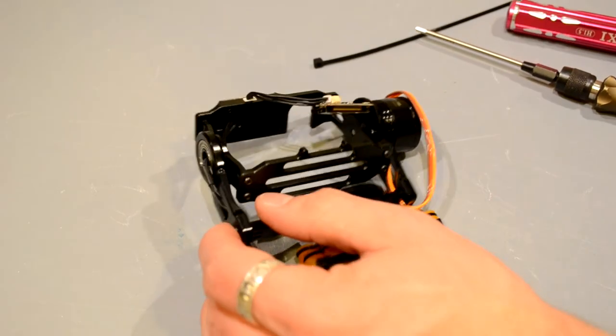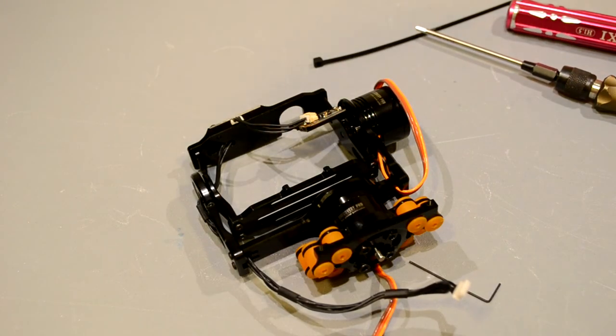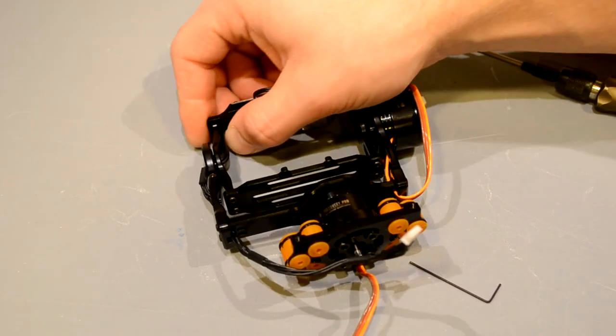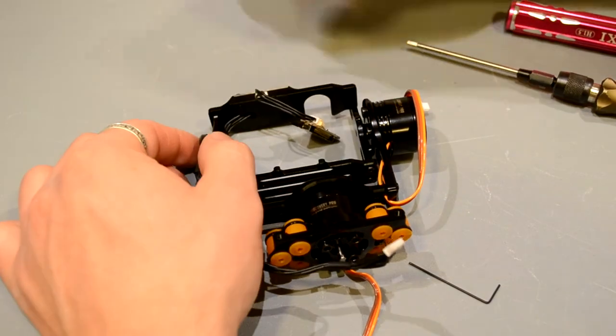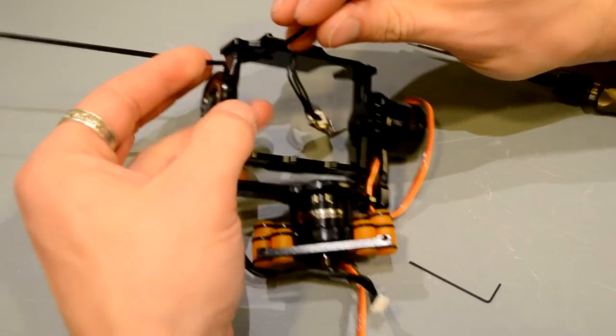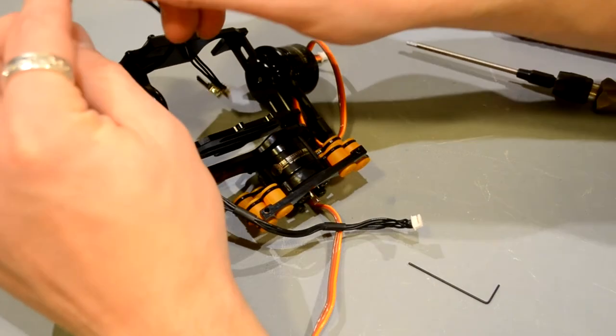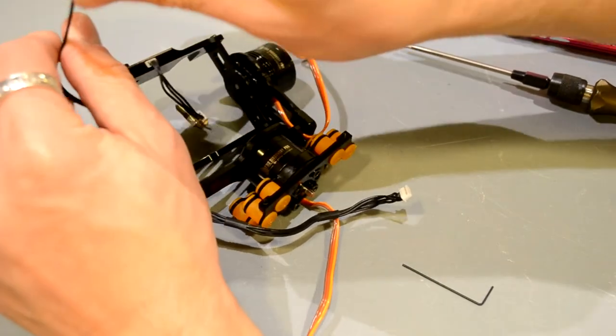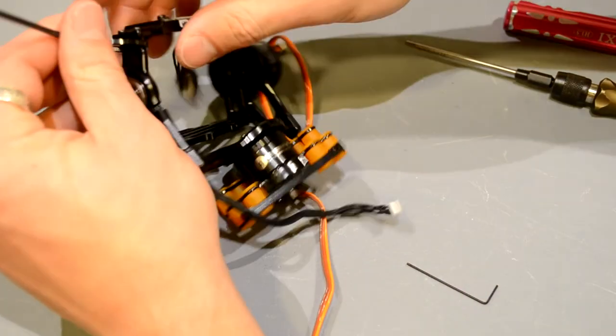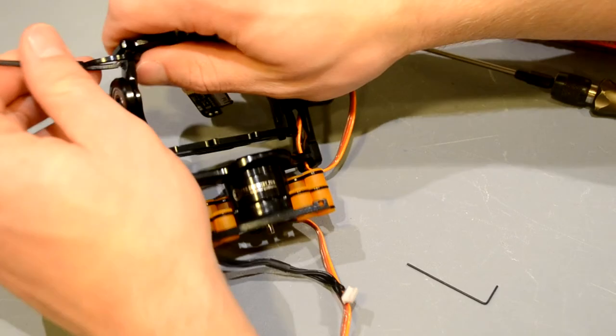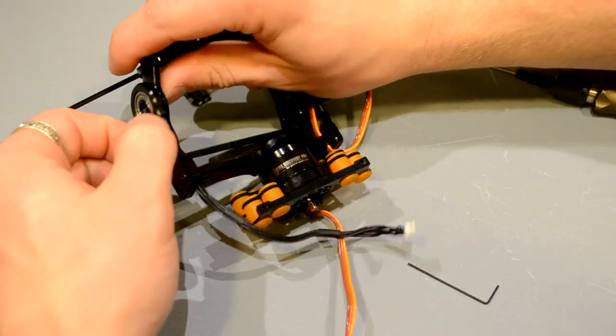And then go ahead and put the screws back in place. Okay, awesome. Now, make sure that there's no piece of heat shrink right here. We're going to go and take a zip tie. Wrap it around.